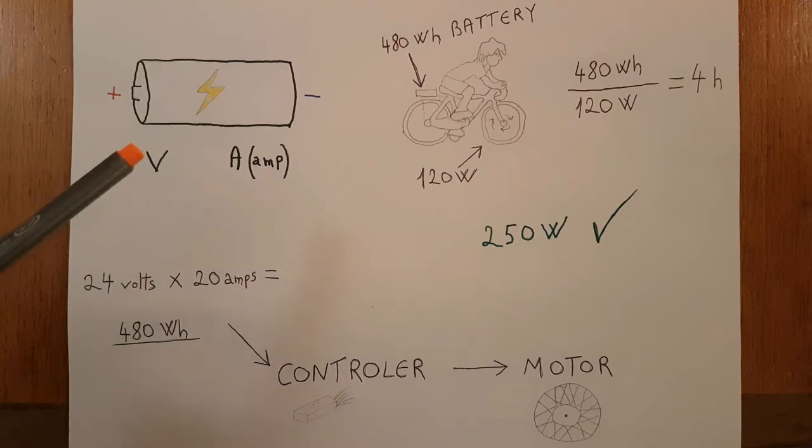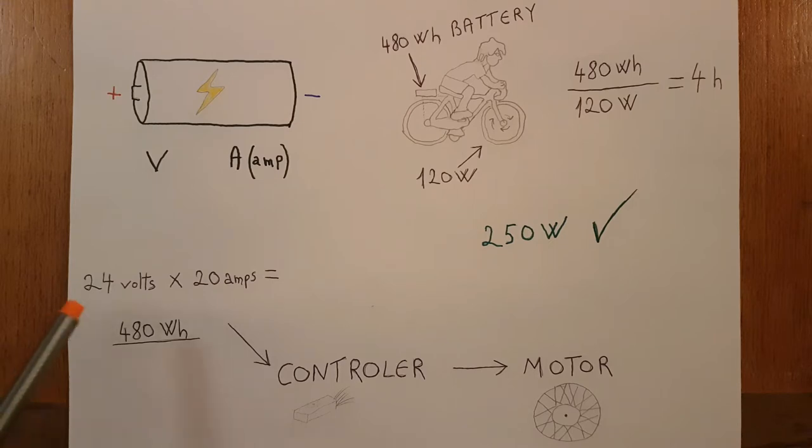All batteries have two characteristics: voltage and amperage. If you multiply these two numbers, you will get the total amount of energy stored in the battery. For example, 24 volts times 20 amps equals 480 watt-hours.